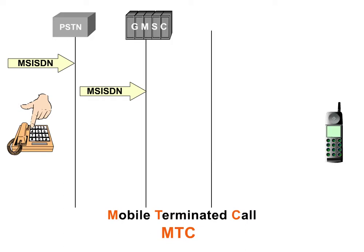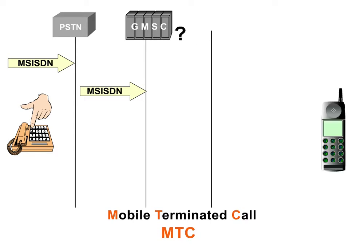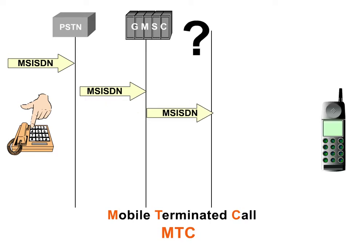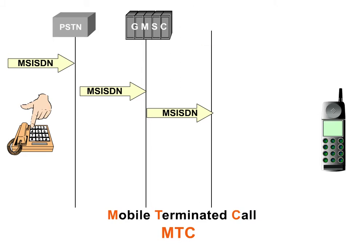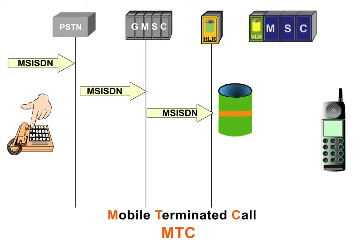The GMSC doesn't know the current location of the called subscriber and therefore starts an appropriate inquiry to the HLR of the called subscriber. The HLR checks its database entries to find the current location or the currently serving MSC/VLR of the called subscriber.